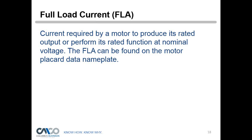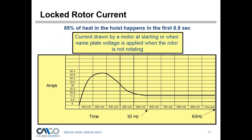The current rating typically drawn by an electric motor is called the FLA — Full Load Amps. This is the current required by a motor to produce its rated output at nominal voltage. The FLA can be found on the motor placard data — in our case 2.2 amps or 3.7 amps. You can only verify this number when the motor is running and you're measuring the current draw going to each winding.